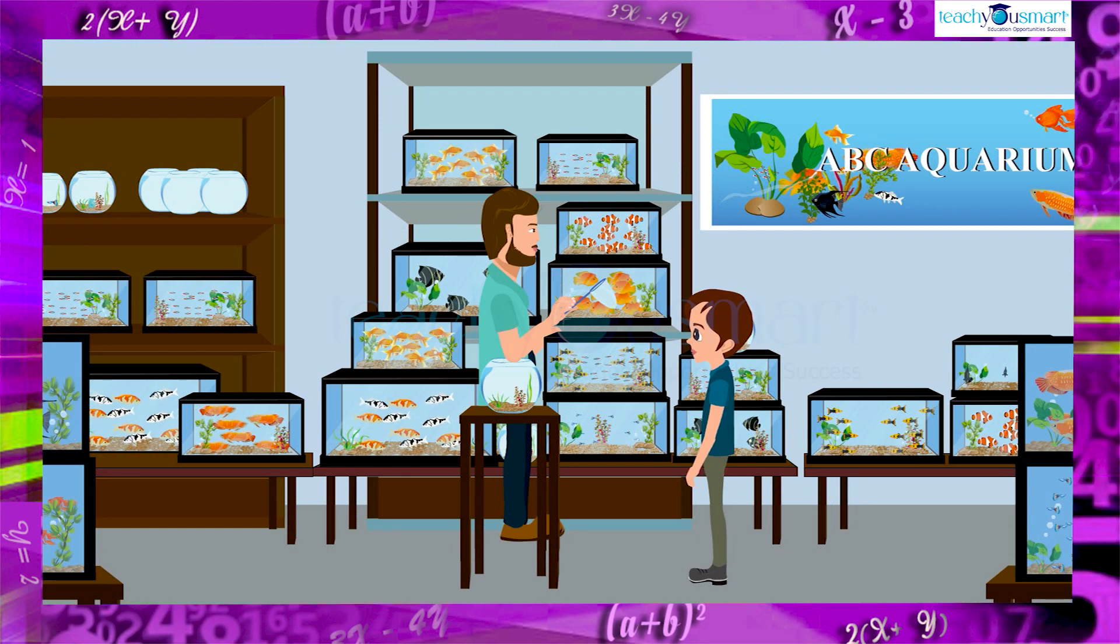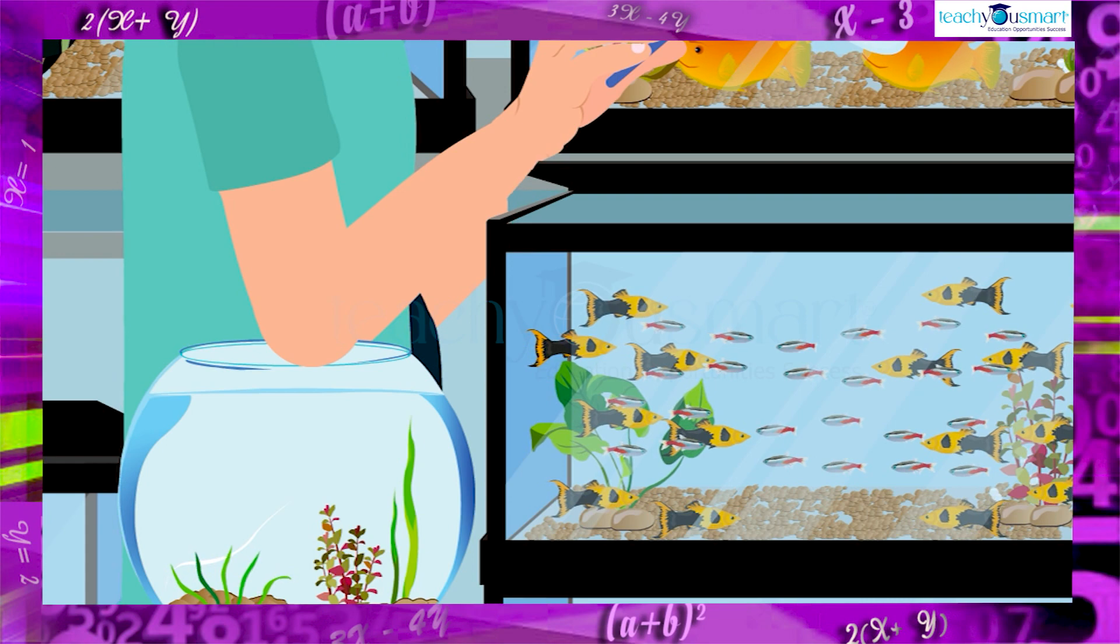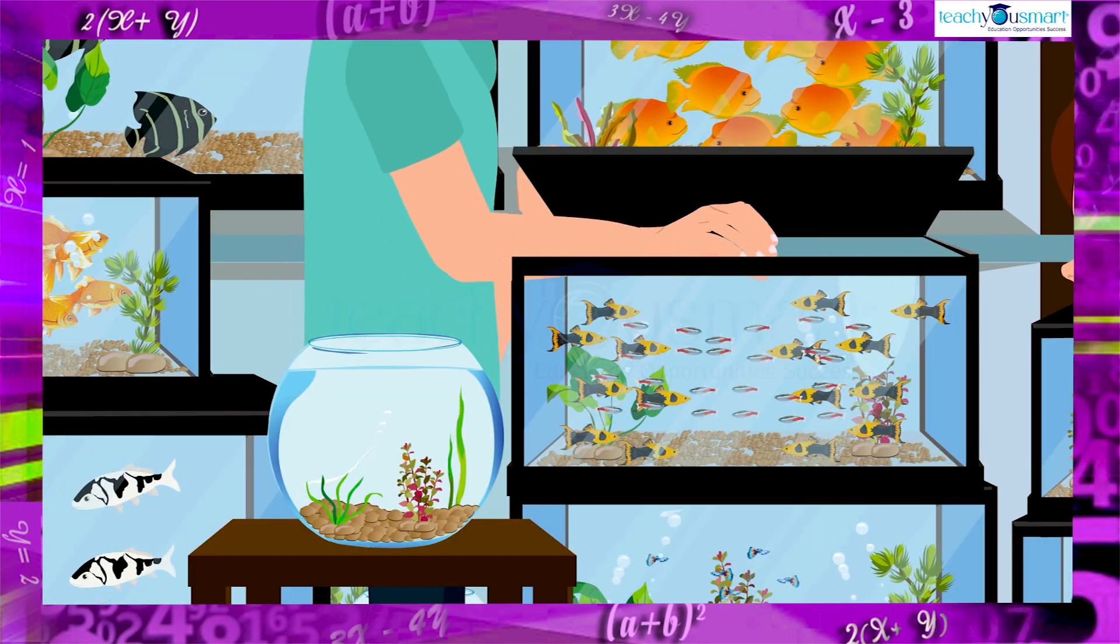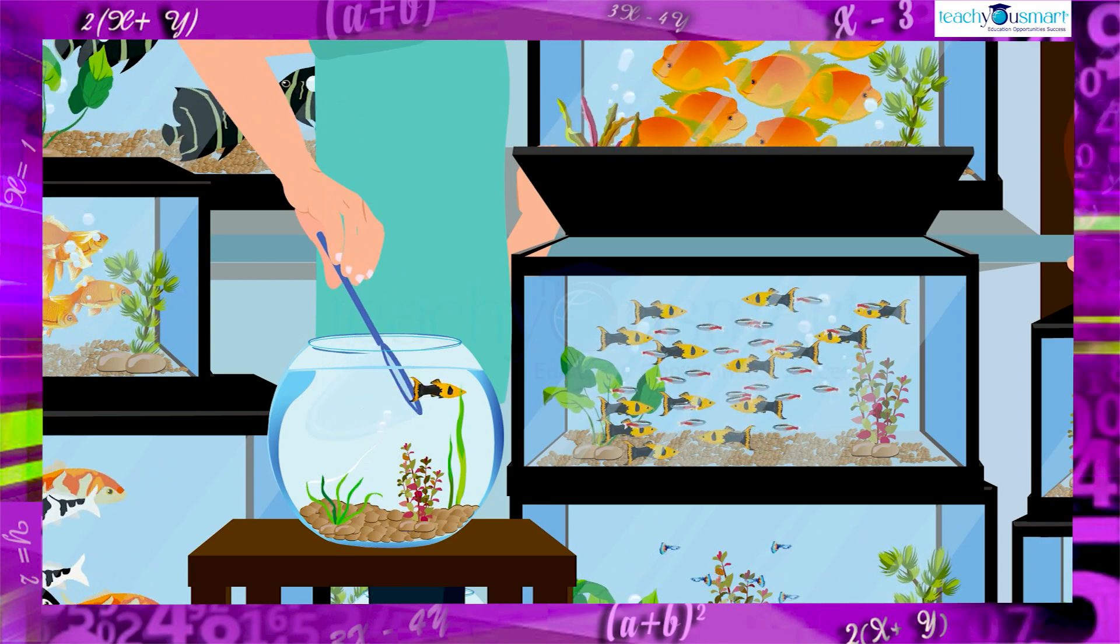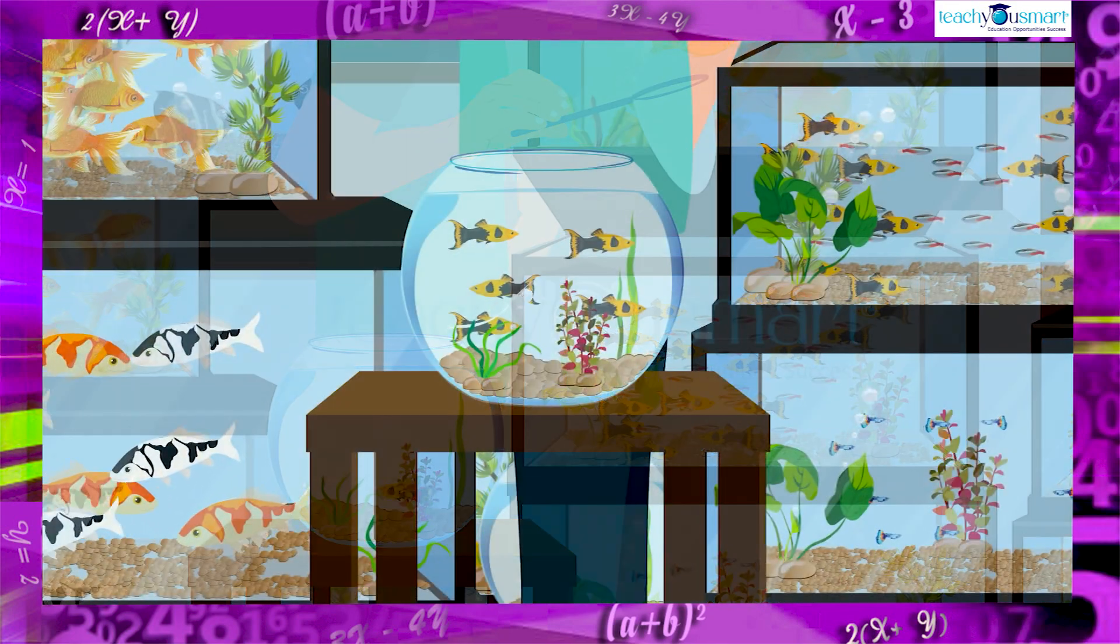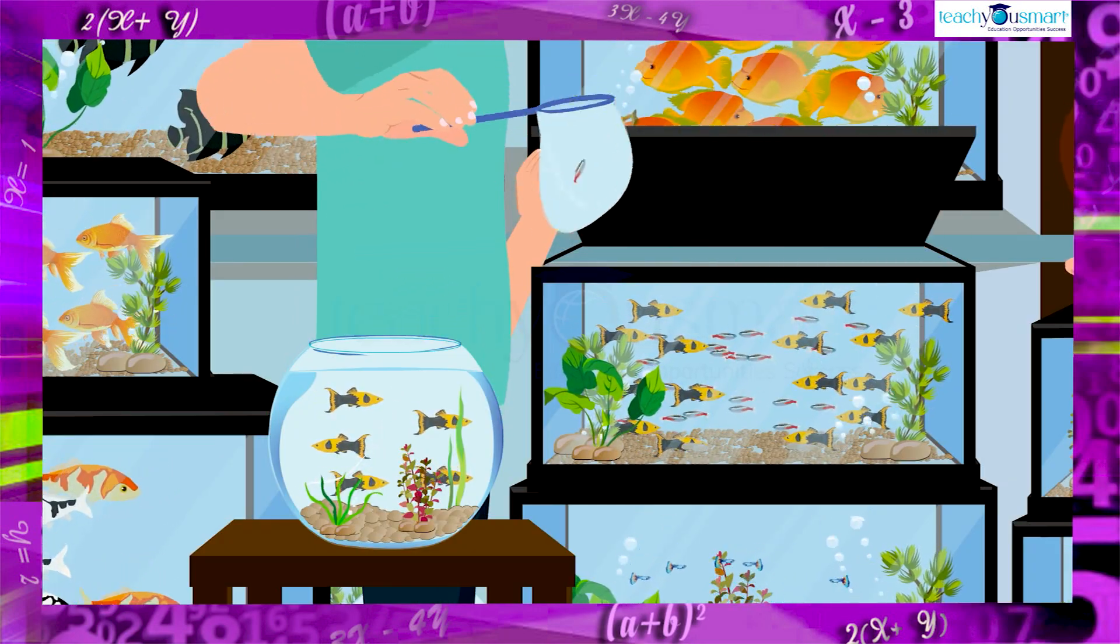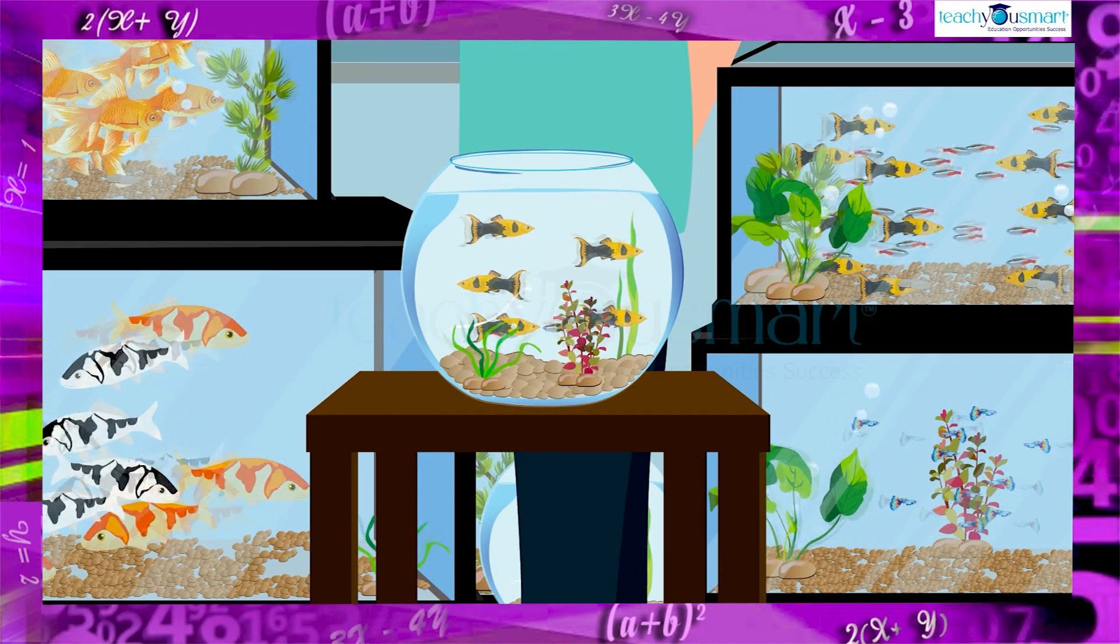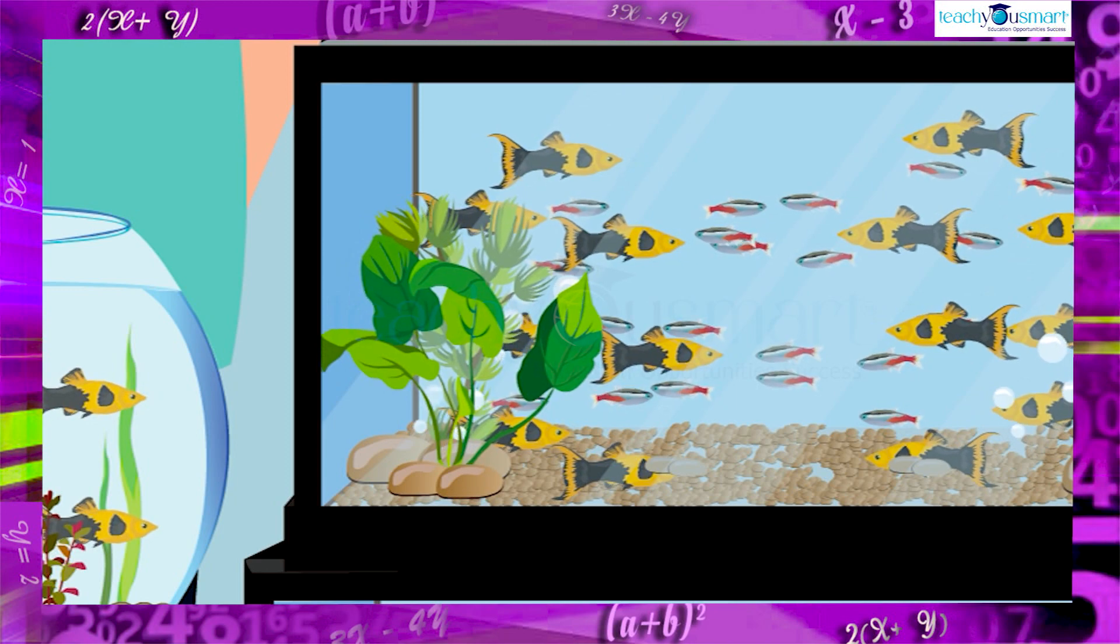Kevin decided to buy some more fishes. He saw some molly fish and neon tetra. He takes five molly fish and three neon tetra. That is, total eight fishes. Then how many fishes are left in the tank?